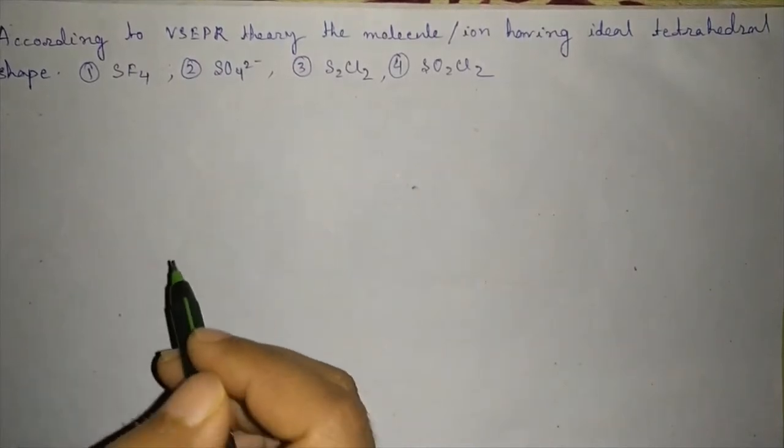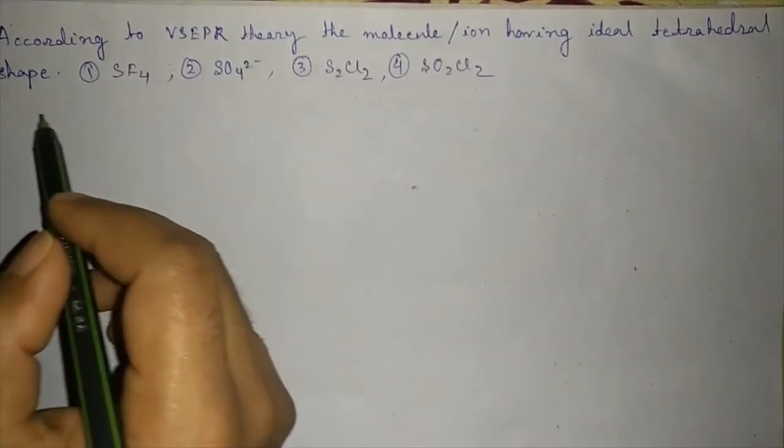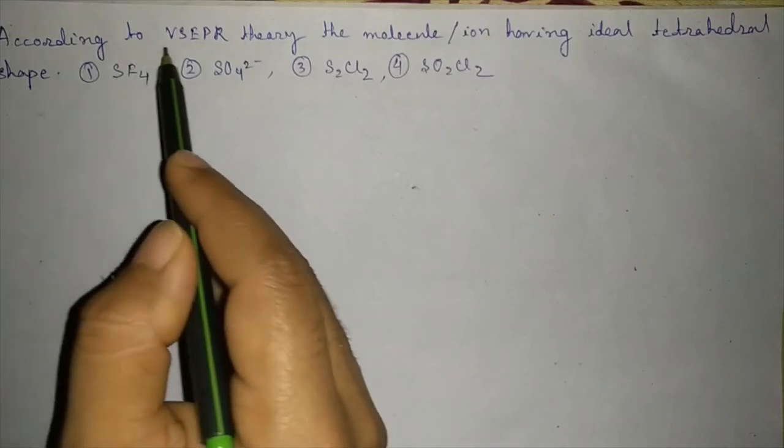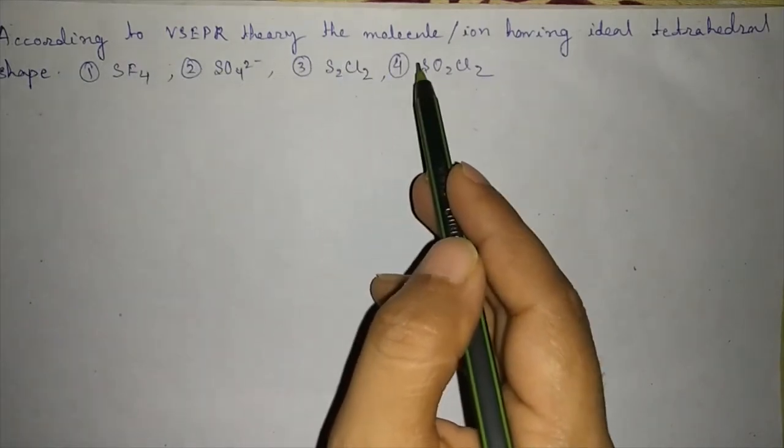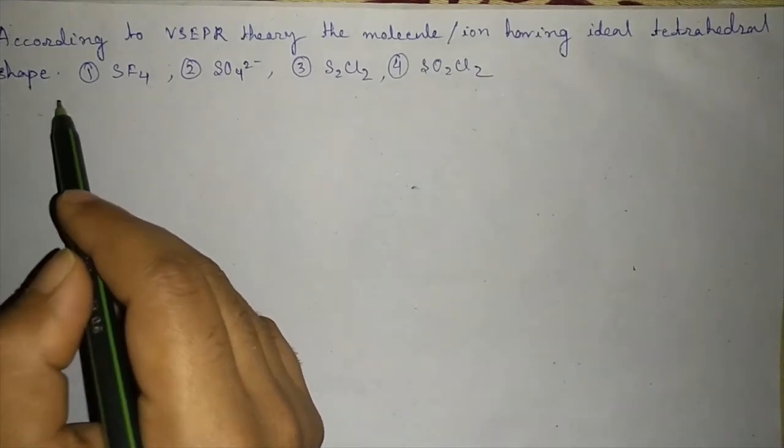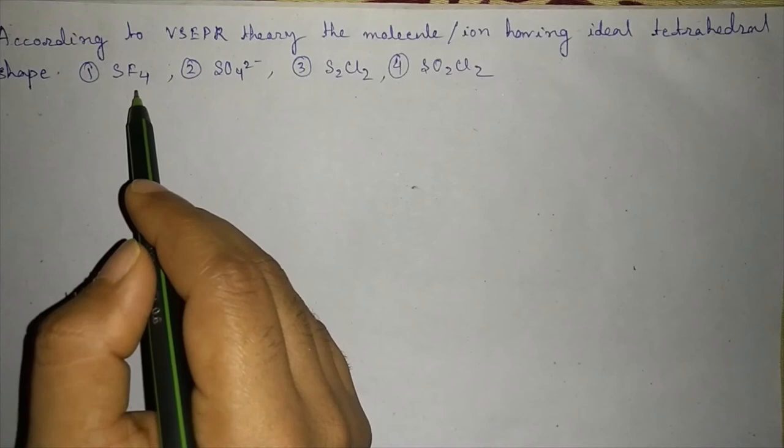Hello students, how are you? Today I am here with another interesting question. According to VSEPR theory, the molecule or ion having ideal tetrahedral shape - which one will be the answer? SF4,